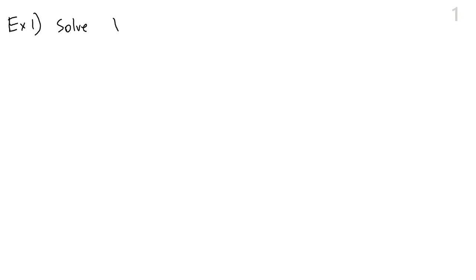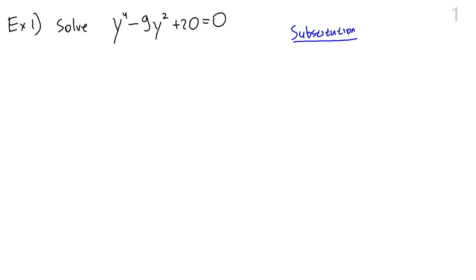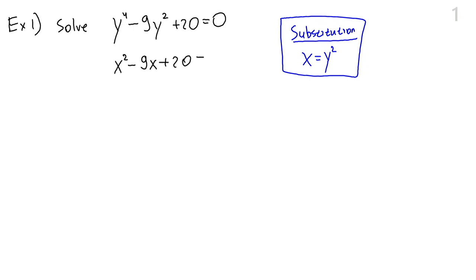Example 1: we are asked to solve y to the 4th minus 9y squared plus 20 equals 0. At first this may seem intimidating because there is an exponent 4 in this equation, but there is no y cubed term and no y term. So really this is a polynomial equation that is quadratic in form. We are going to do a substitution. We say let x equal y squared and rewrite this equation. Then this becomes x squared minus 9x plus 20 equals 0. This is a quadratic equation — we know how to solve quadratic equations.